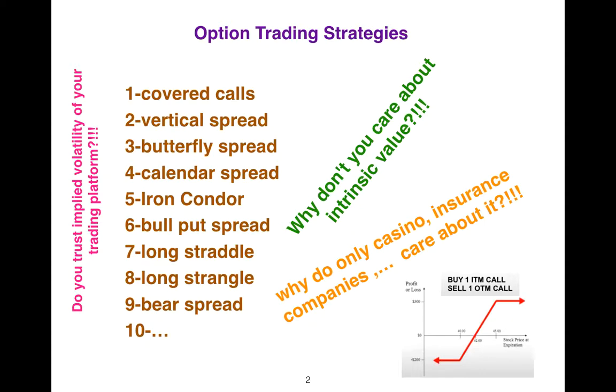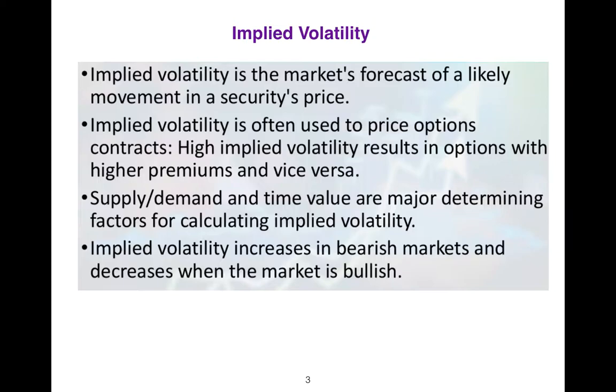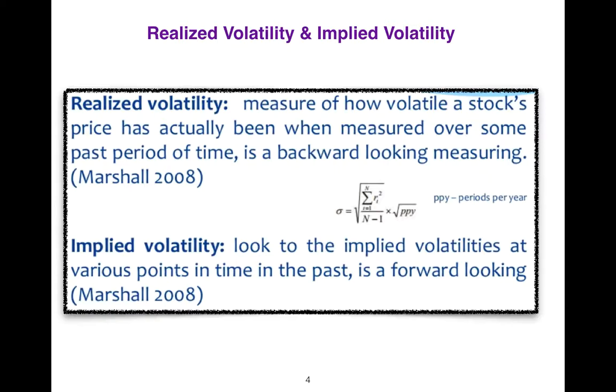It's interesting that I will show you why we are paying more premium for anything—for options, for a casino, for insurance companies. Implied volatility is the market's forecast of a likely movement in a security's price.